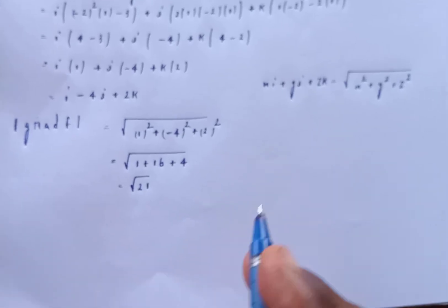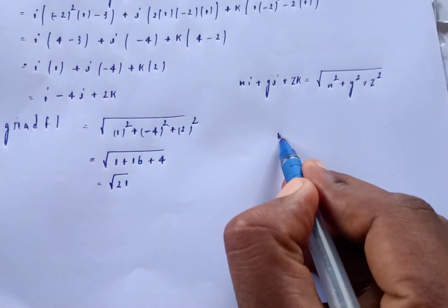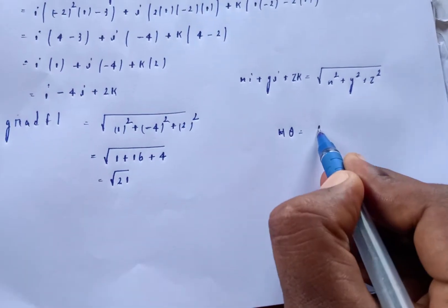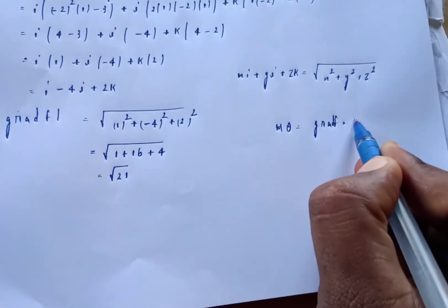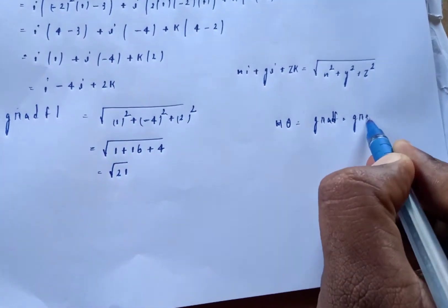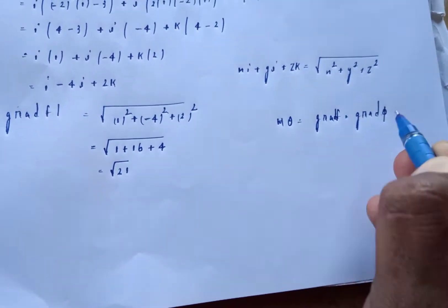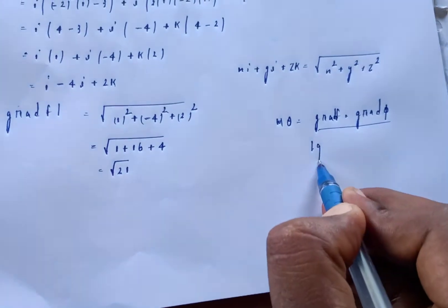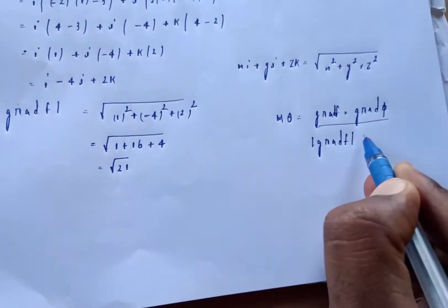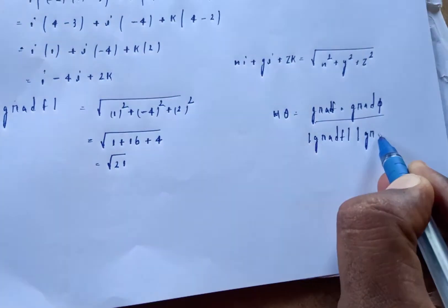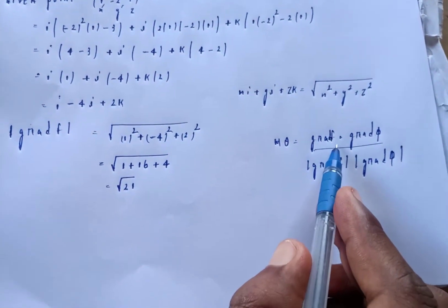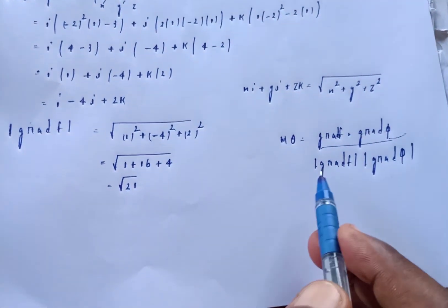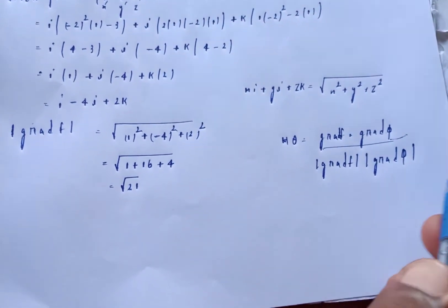The formula for the angle between two surfaces is: cos θ = (grad F · grad φ) / (|grad F| · |grad φ|). So we need to compute grad F2 (grad φ) next.